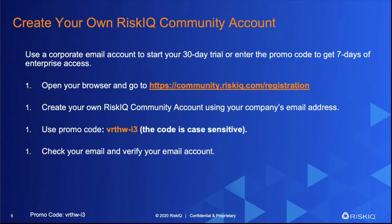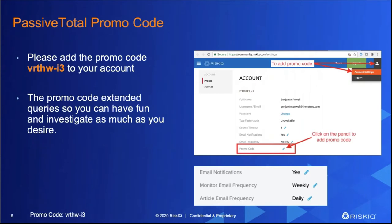If you haven't yet created an account in Passive Total, go to community.riskiq.com/registration. During that process you can add the promo code. If you already have an account, once you log into Passive Total, in the upper right-hand corner there is an account settings section under the person icon. Go to promo code under profile, click the little pencil, and that's where you add the promo code — VRTHW-I3, case sensitive. Once you enter it and click off that field, your API queries and total queries will jump up dramatically.